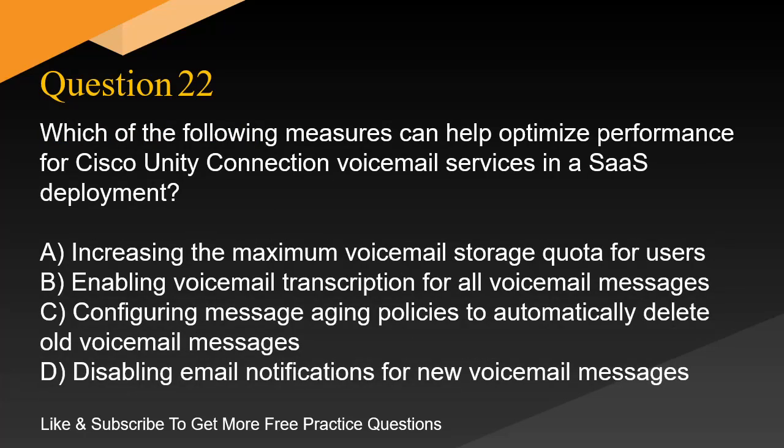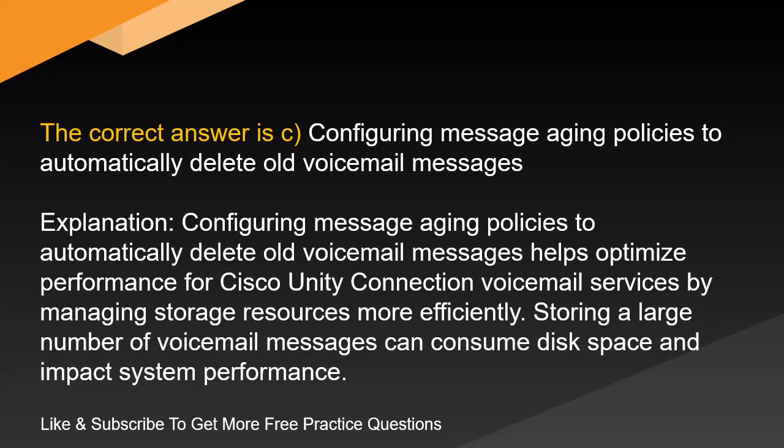Question 22. Which of the following measures can help optimize performance for Cisco Unity Connection voicemail services in a SaaS deployment? A. Increasing the maximum voicemail storage quota for users. B. Enabling voicemail transcription for all voicemail messages. C. Configuring message aging policies to automatically delete old voicemail messages. D. Disabling email notifications for new voicemail messages. The correct answer is C. Configuring message aging policies to automatically delete old voicemail messages helps optimize performance for Cisco Unity Connection voicemail services by managing storage resources more efficiently. Storing a large number of voicemail messages can consume disk space and impact system performance.